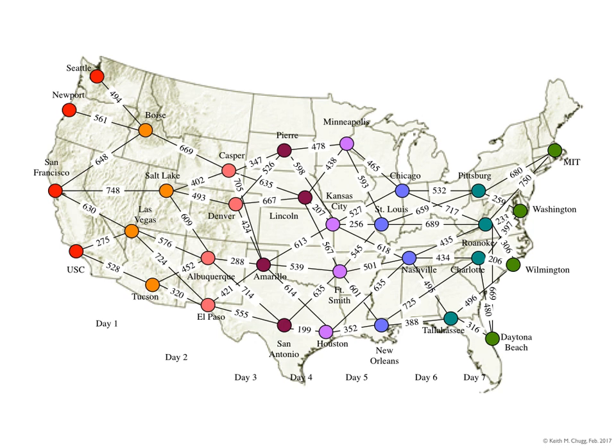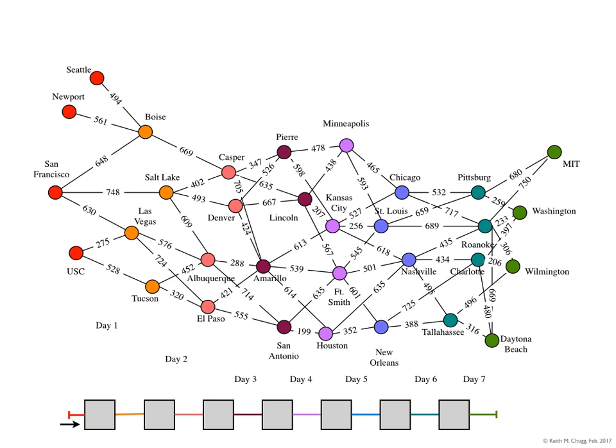For example, at the end of the first day, this leaves me with four possible cities: Boise, Salt Lake, Las Vegas, and Tucson. On the third day, it's the pink colored cities of Casper, Denver, Albuquerque, El Paso, etc. This would take me seven days, and each day I would drive less than 750 miles. The problem I want to consider is what's the shortest way to go from the west coast to the east coast — I know it's going to take seven days, but I want to drive the least amount of mileage. Let me get rid of the background so you can see this diagram a little more clearly.